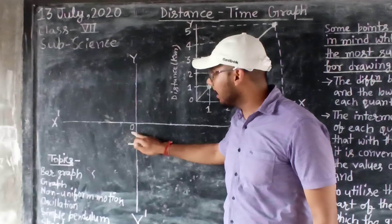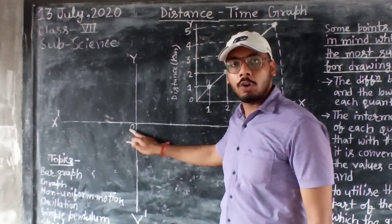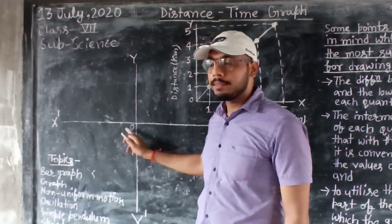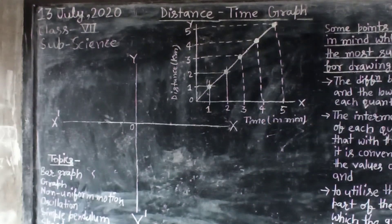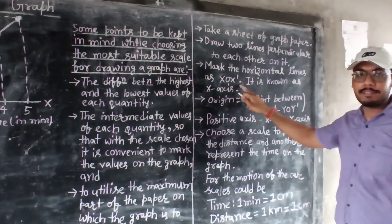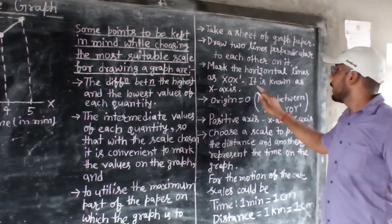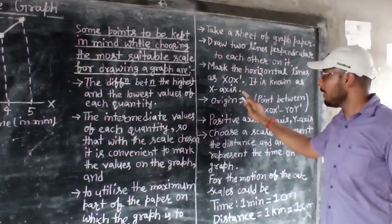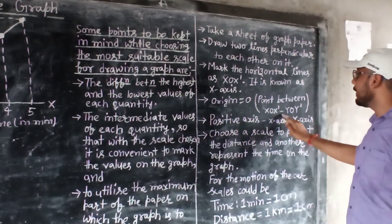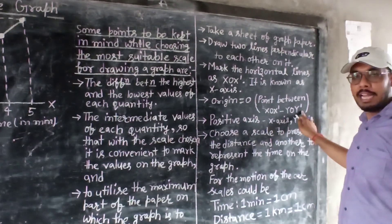And second one is the YOY dash axis. So in between them, a point is there, you can see this is called the origin and we name it O. So after that, mark the horizontal line as XOX dash that we have already done. It is known as the X axis. And origin O, that is the point between XOX dash and YOY dash that we have already mentioned.